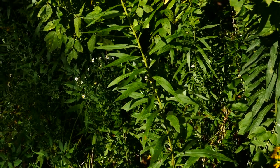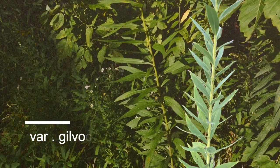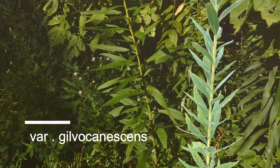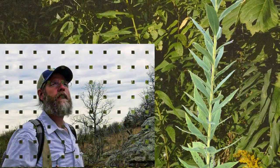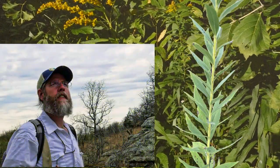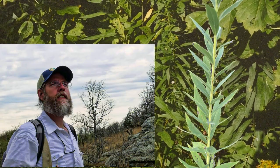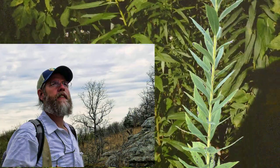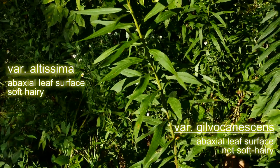That's Solidago altissima — what we get around the Great Lakes region for the most part. There is variety gilvocanescens — some people put that in its own species. A friend of mine, a great botanist, Justin Thomas, mentions that the leaves of gilvocanescens are a little more gray-green and are not as soft and hairy on the abaxial side — so on the bottom of the leaf, not really soft and hairy.